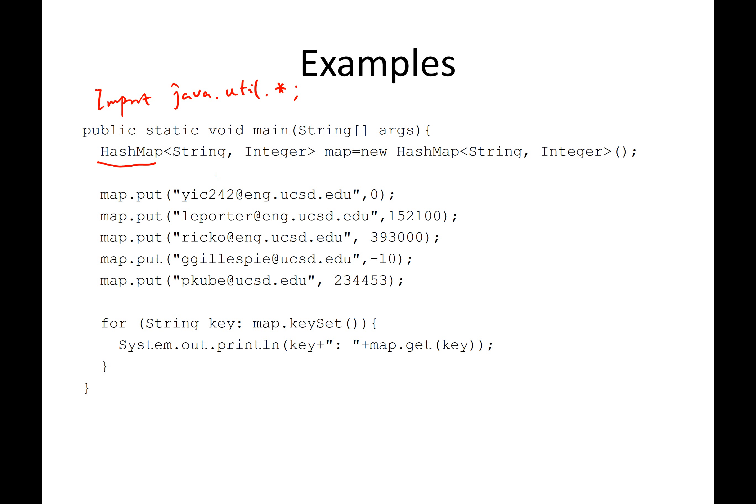And then the HashMap, you need to provide two things. The first thing is the key. The second thing is the value. So this HashMap is a mapping between a string key and the integer value. You create a map object.